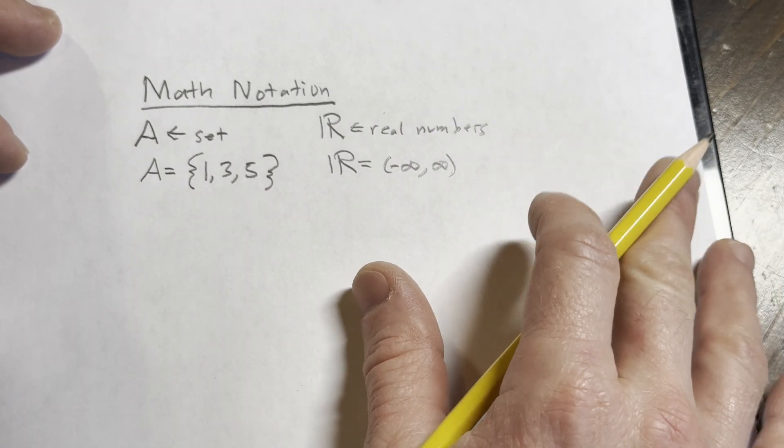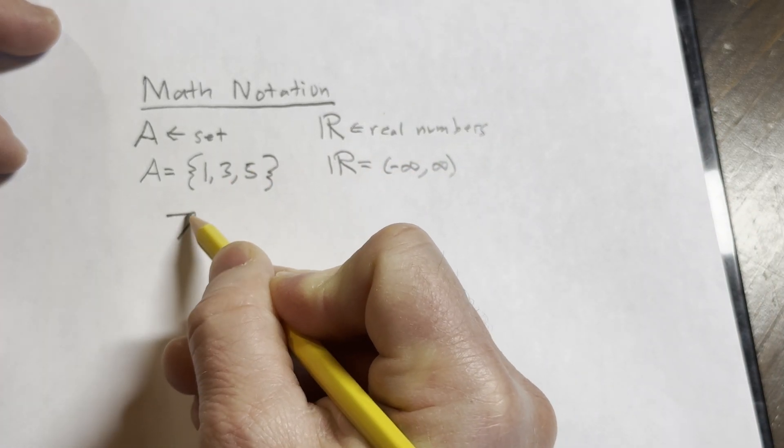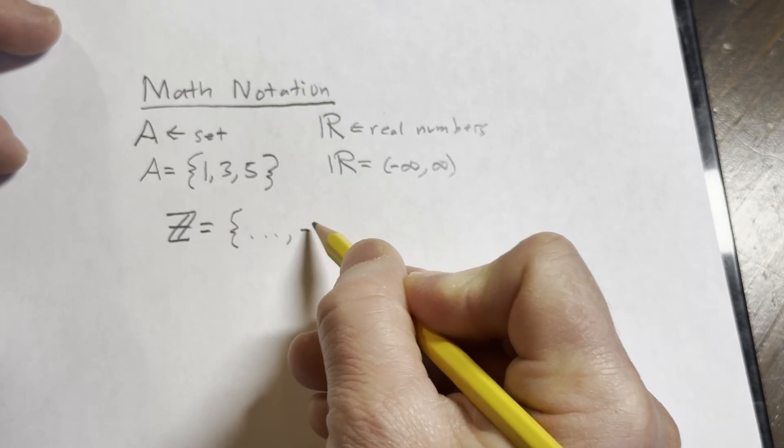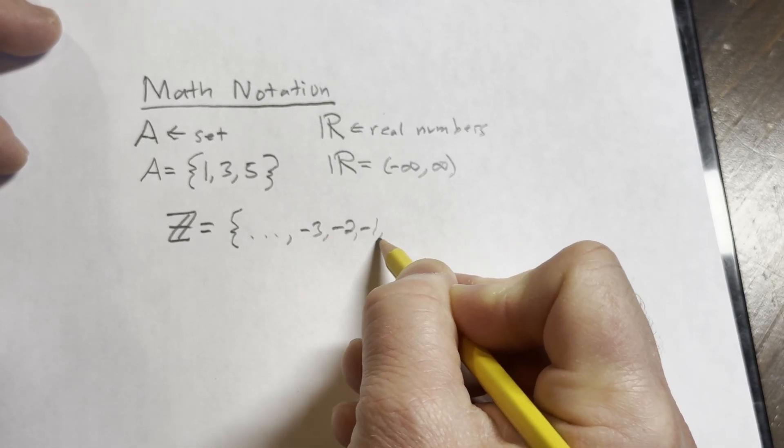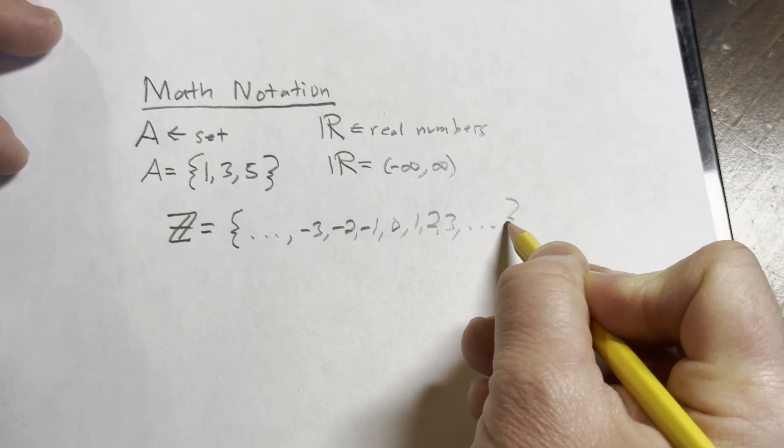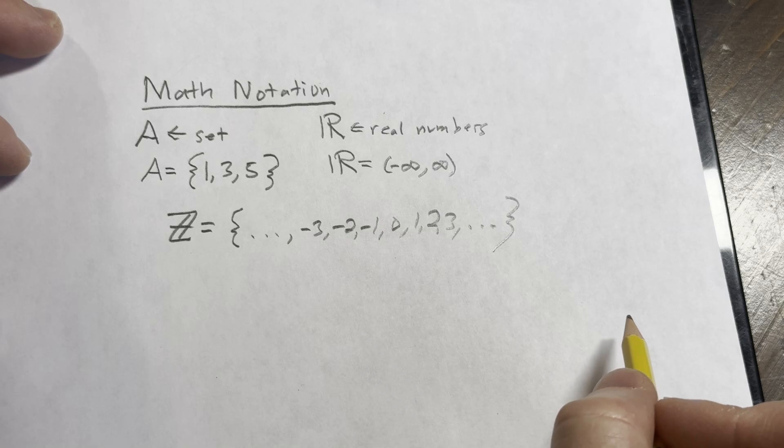Another very important set that we're going to be looking at is the set of integers, which is this one here. This is the set containing negative three, negative two, negative one, zero, one, two, three. All the integers, positive, negative, and zero as well.